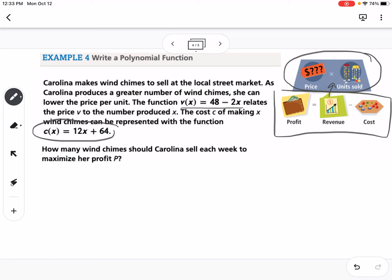So revenue, I'm going to use R of X. Revenue is our price, which is 48 minus 2X times the number produced, which is just X. So if we multiply that out there, that would become 48X minus 2X squared. So that's our revenue.